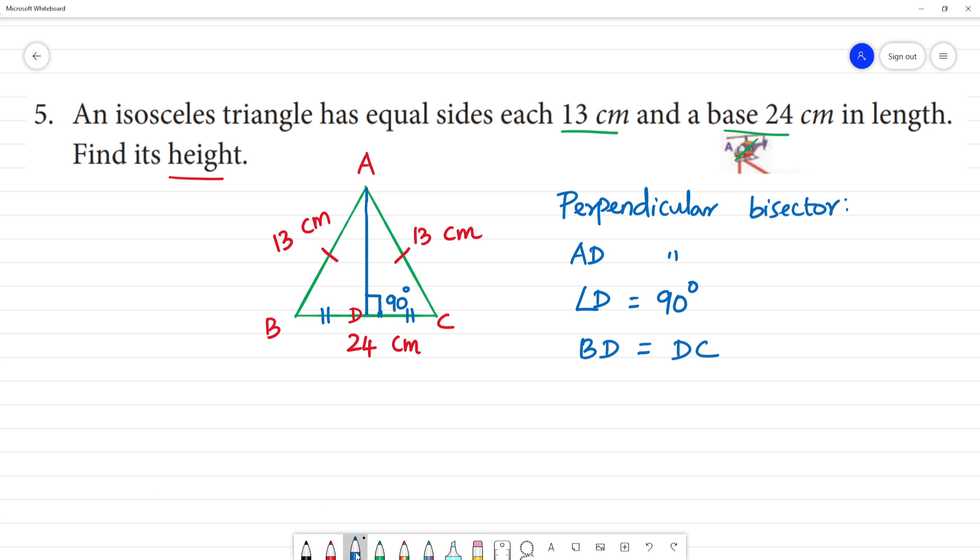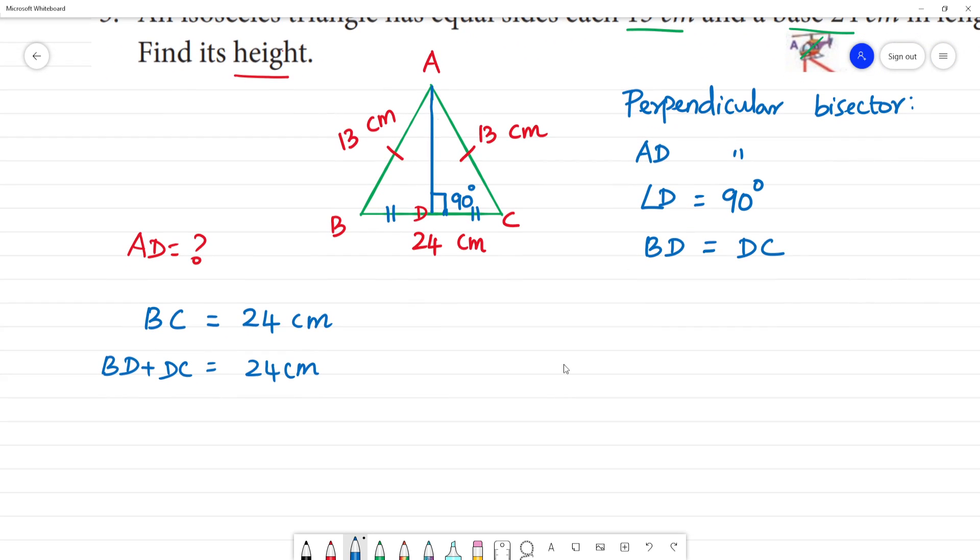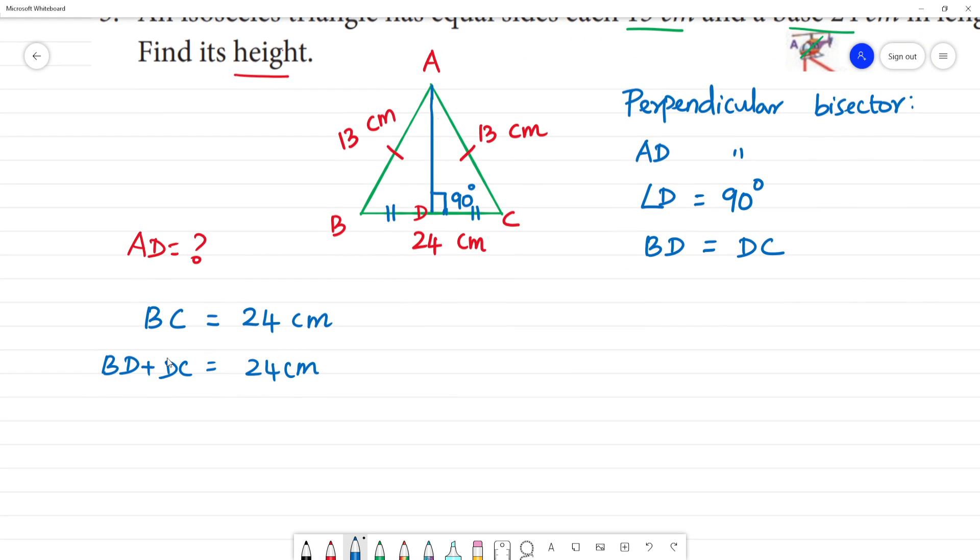We need to find height AD. BC is 24 cm. BD plus DC is equal to 24 cm. If we divide half by half, BD equal to DC.